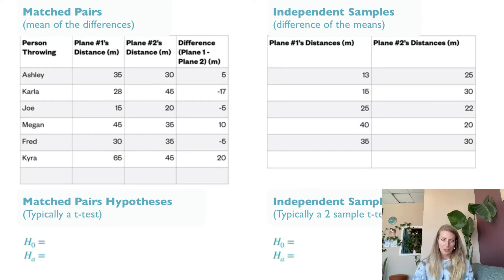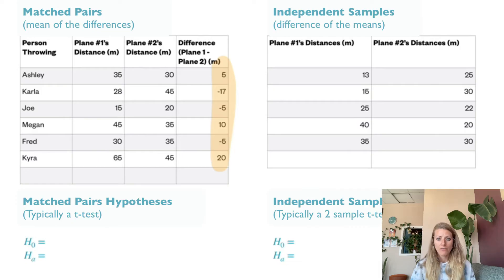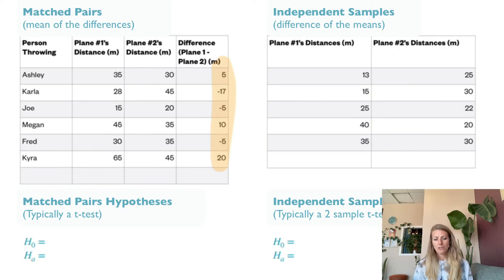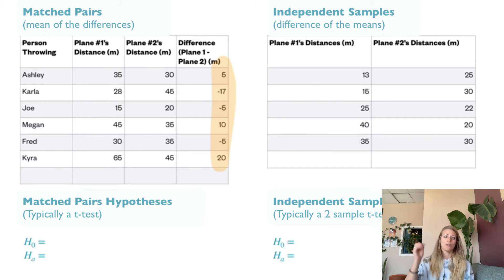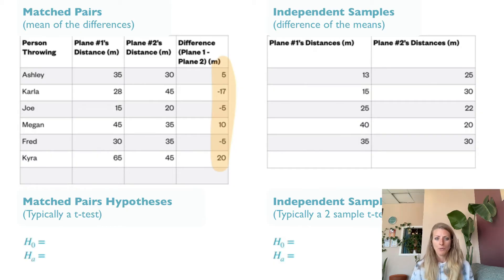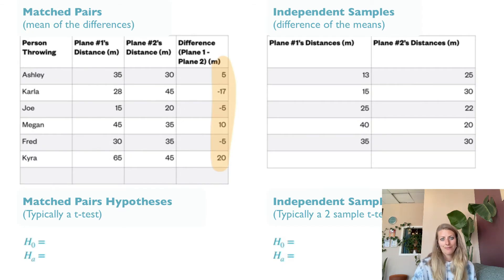What you're actually calculating and measuring the average of — the mean of — is the difference: plane one's distance minus plane two's distance. Just make sure you're consistent: always doing one minus two, one minus two. So Ashley has a difference of five. Carla throws plane one and then plane two. Joe throws plane one and then plane two. And then you compare the differences between those two throws for each individual. Your X-bar is the mean of the differences.